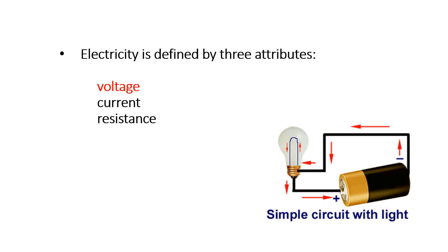Electricity is defined by three attributes: voltage, current, and resistance. In our lesson, we will discuss mainly voltage as a main attribute of electricity.